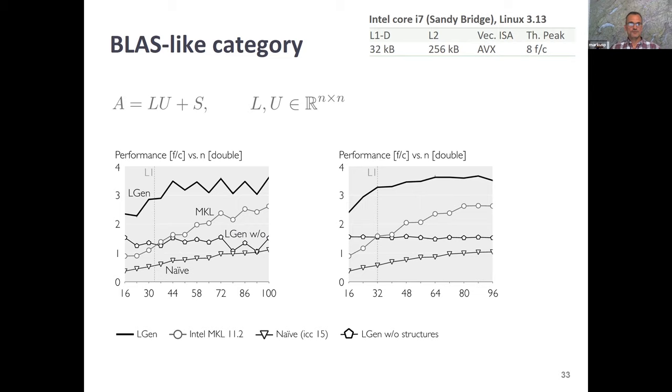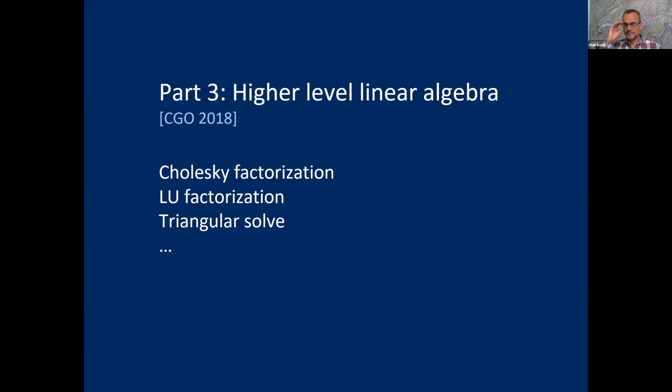Here are results for structured linear algebra: a computation of lower times upper triangular plus symmetric. Our generated code achieves performance improvements over MKL. For sizes not divisible by the vector length, performance is harder; for sizes divisible by the vector length, performance is better. Compared to LGen without structure exploitation, ignoring structure gives about 2x lower performance.